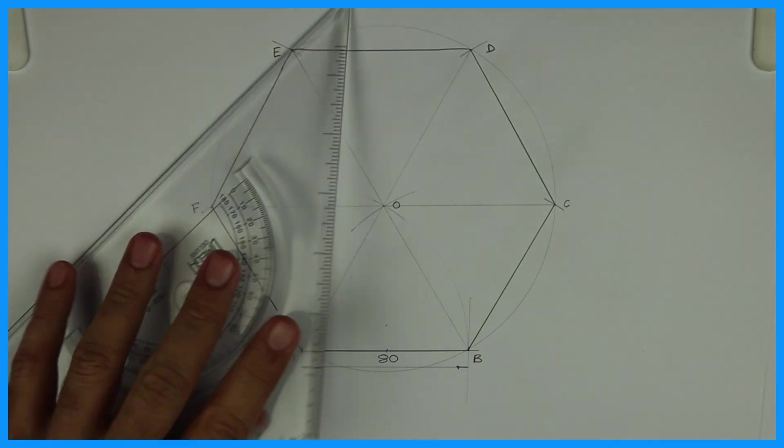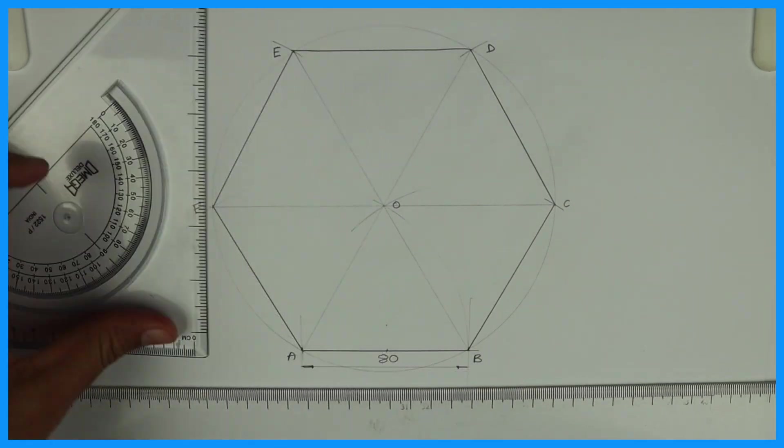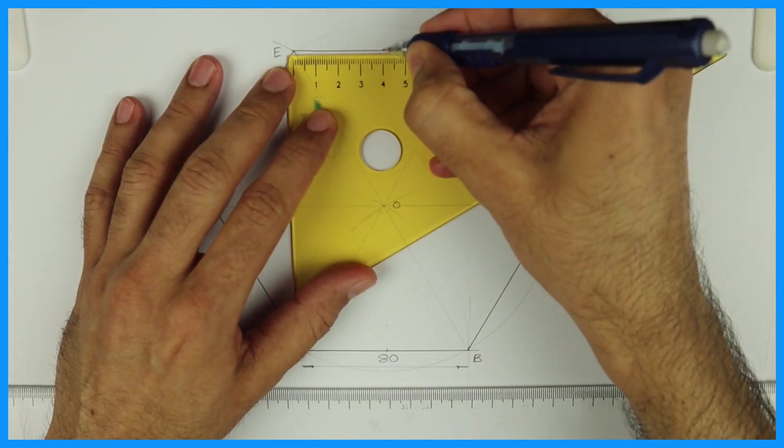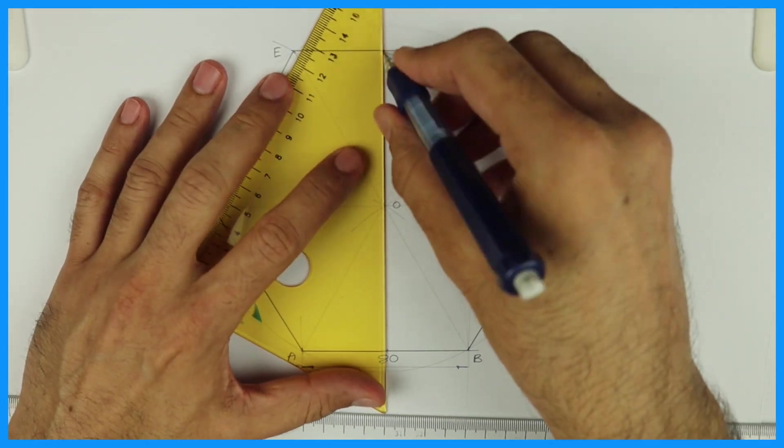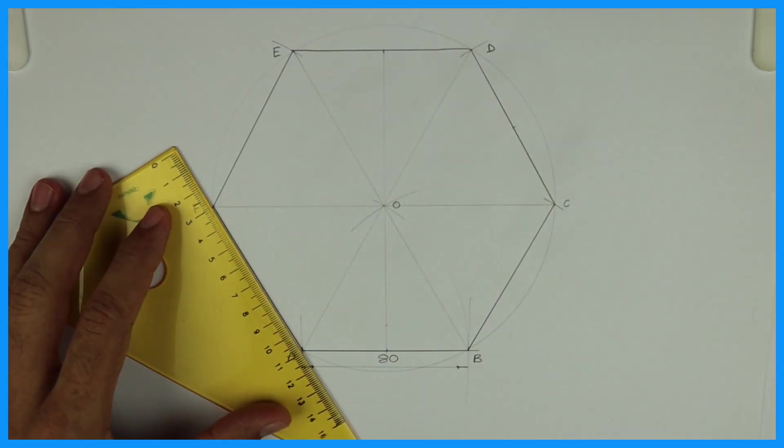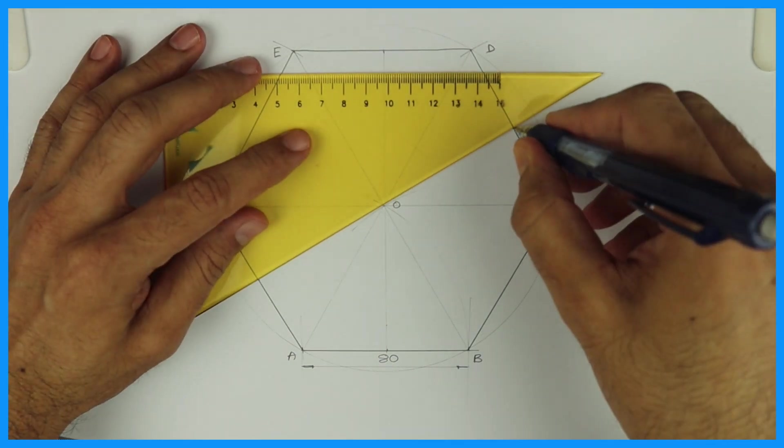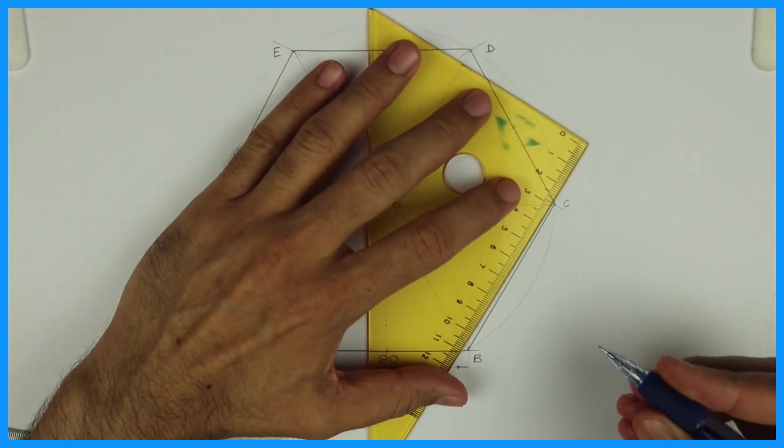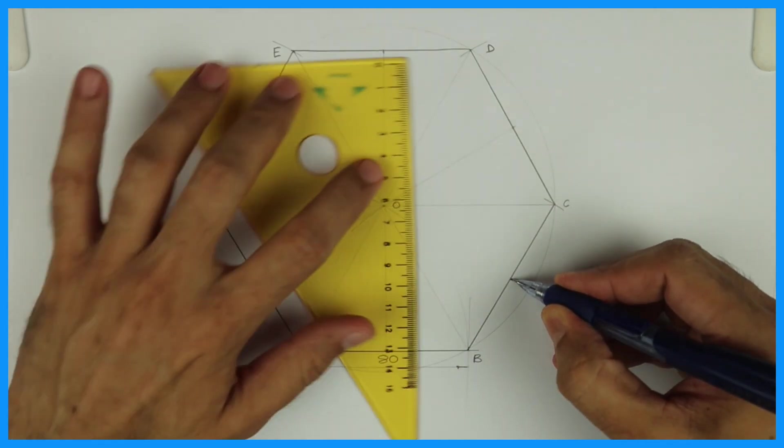Then we'll take the midpoint of all the sides. Join the midpoints—opposite midpoint to opposite midpoint.